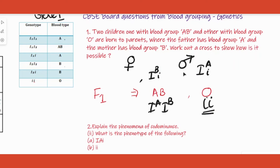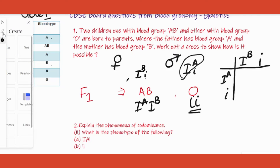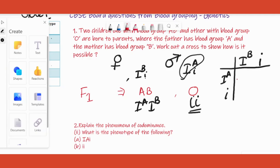So mother is Ibi and father is Iai. Draw the Punnett square: one allele from each parent gives us IaIb, Iai, IbI, and ii. That gives us blood group AB, blood group A, blood group B, and blood group O. We got O — yes. We got AB — yes. This is the correct cross.